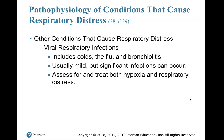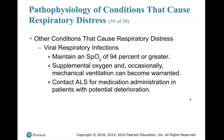Viral respiratory infections include colds, the flu, and bronchiolitis — usually mild, but significant infections can occur. Assess for and treat both hypoxia and respiratory distress. Maintain SpO2 of 94% or greater. Supplemental oxygen and occasionally mechanical ventilation can become warranted. Contact ALS for medical administration in patients with potential deterioration.